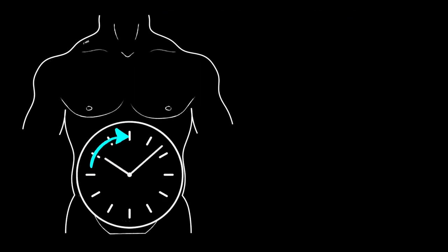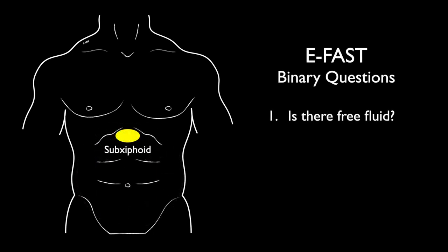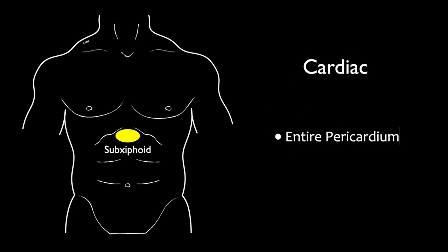After finishing the right upper quadrant, we go to the sub-xiphoid area. I would suggest making the right upper quadrant and sub-xiphoid your first views, as these will most often explain why a patient is hypotensive. In addition to evaluating the pericardial sac for free fluid, we may be able to evaluate heart function. When looking at the cardiac evaluation, we want to see the entire pericardium to evaluate for free fluid, and then we need to see the interior myocardial walls to assess for function.